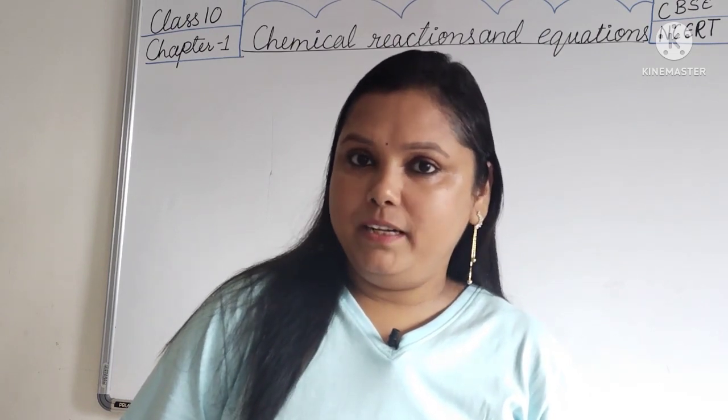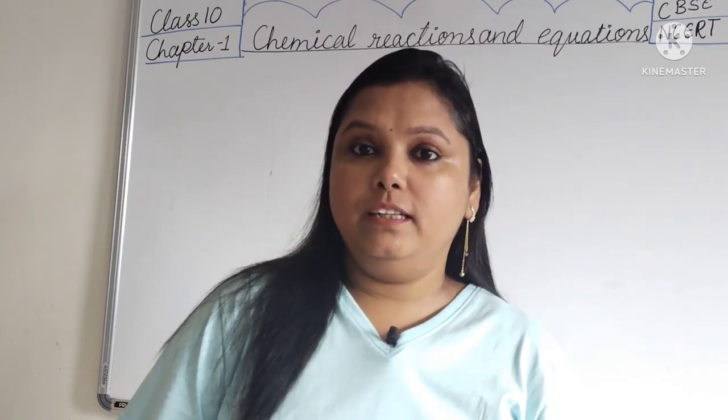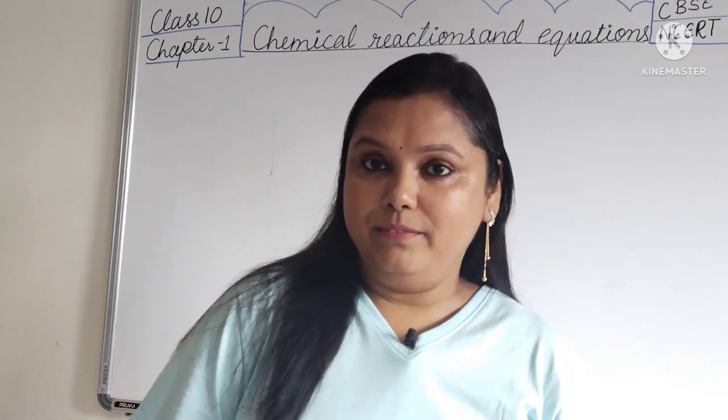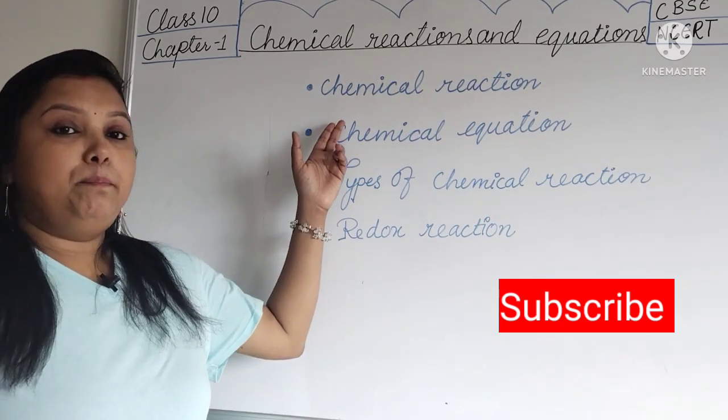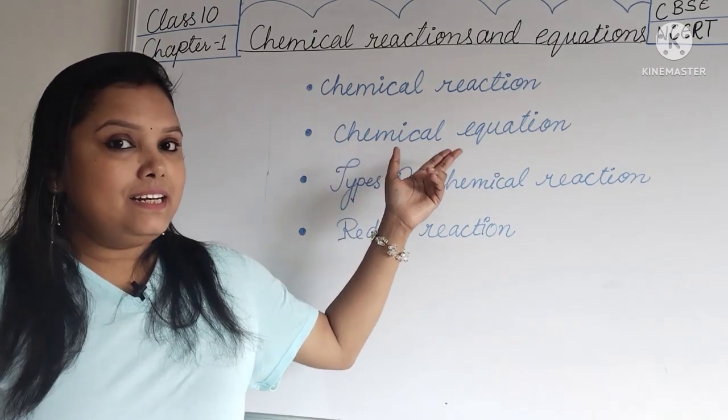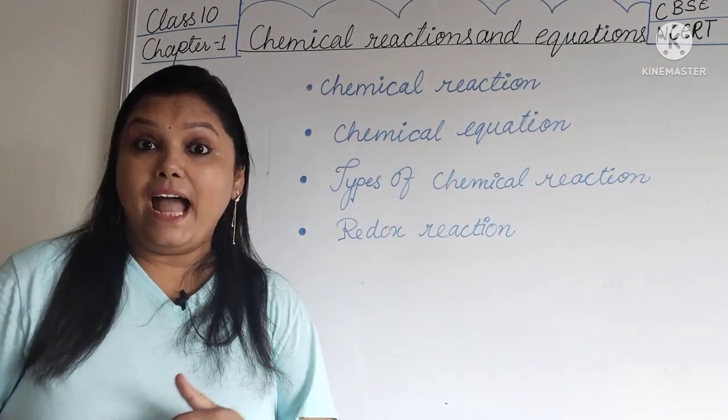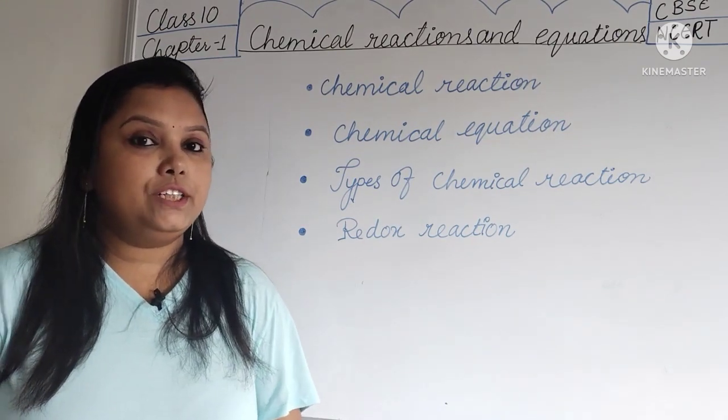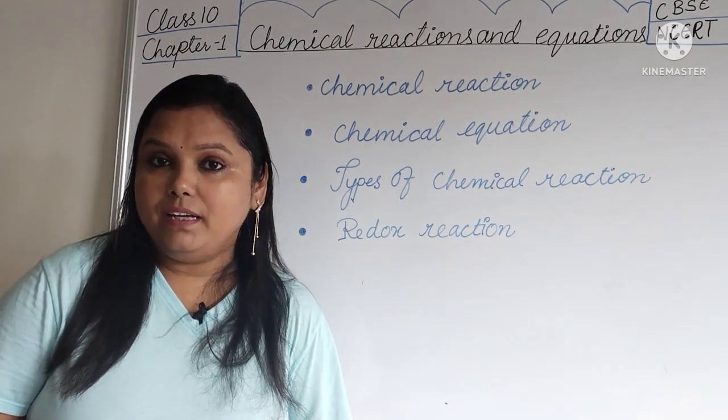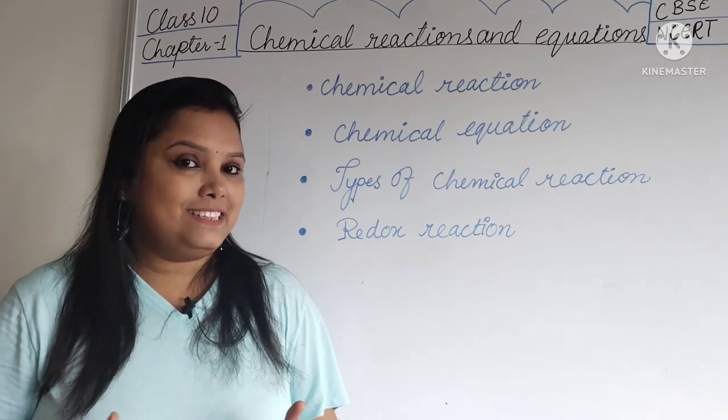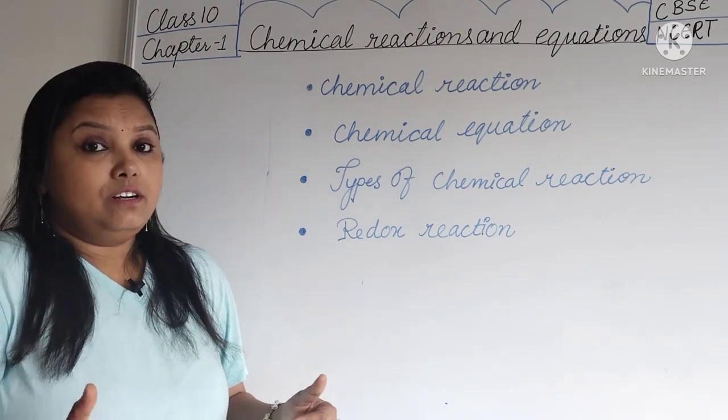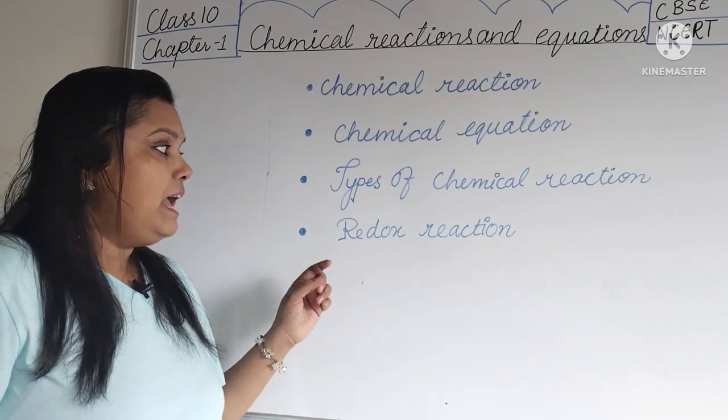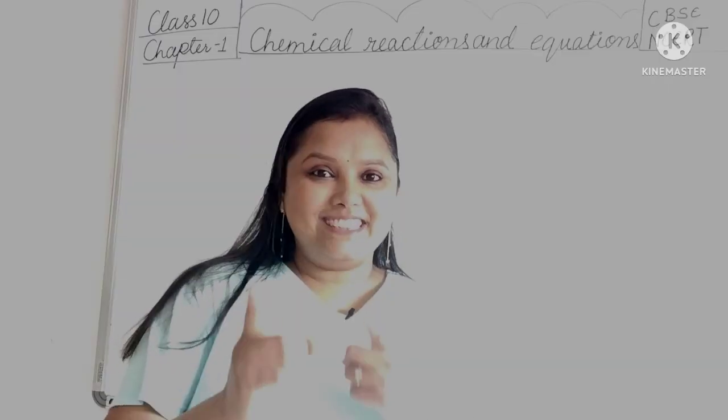Today we are going to start the chapter Chemical Reaction and Equation and this is for class 10th and this is chapter number 1. In this chapter, we will learn about what are chemical reactions and how to identify them. We will learn about what are chemical equations, how to write these chemical equations and how to balance the chemical equation. What are the various types of chemical reaction? We will learn about them also and what are redox reactions? Let's start.